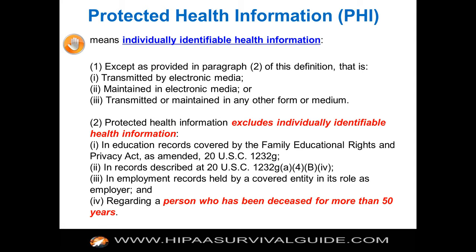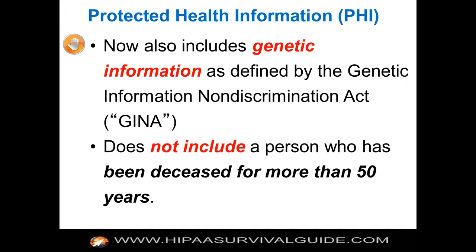State laws may modify how long PHI must be kept, but the HIPAA regulations do not. This just means that after death plus 50 years, information is no longer PHI. PHI now includes genetic information as defined by the Genetic Information Non-Discrimination Act — that was totally new and introduced in the omnibus rule. It does not include health information of a person who has been deceased for more than 50 years, educational records, or PHI held by a covered entity in its role as employer.